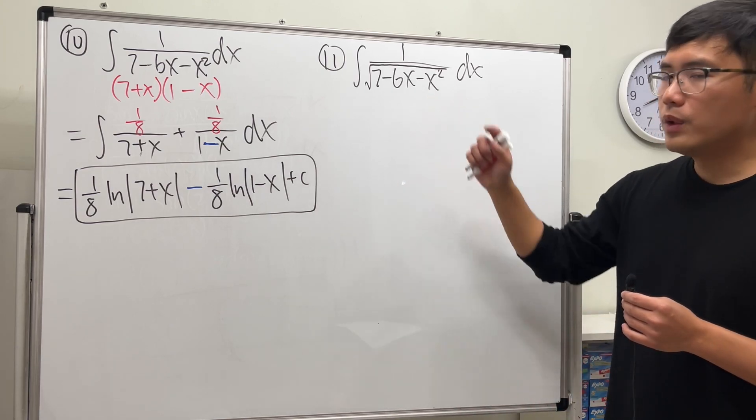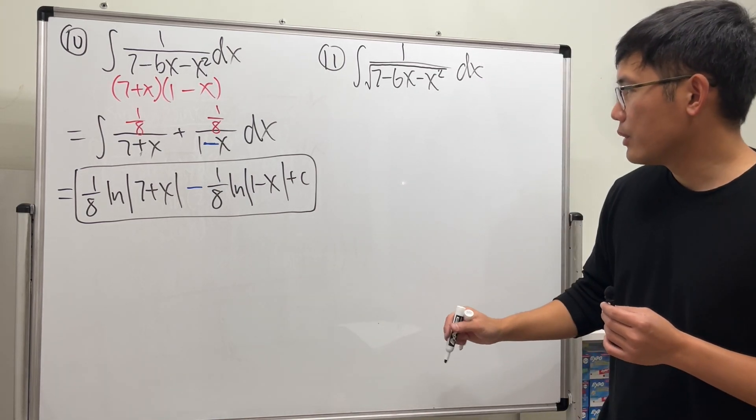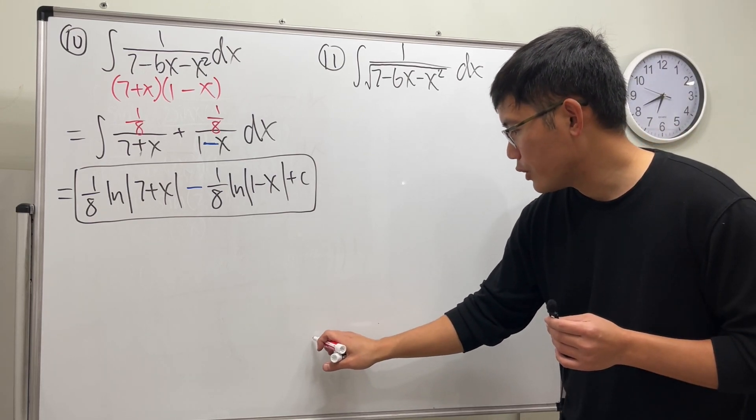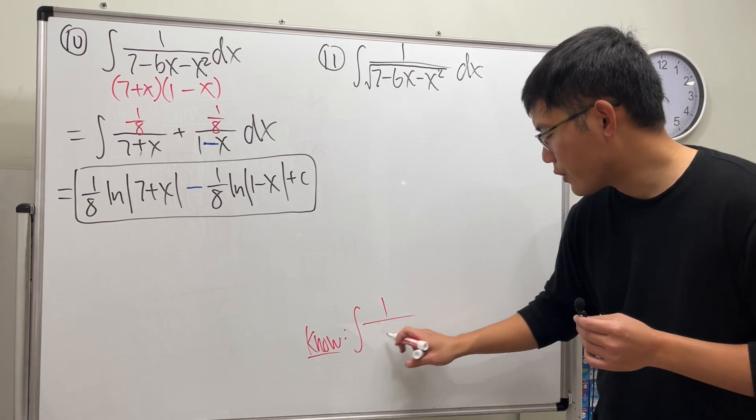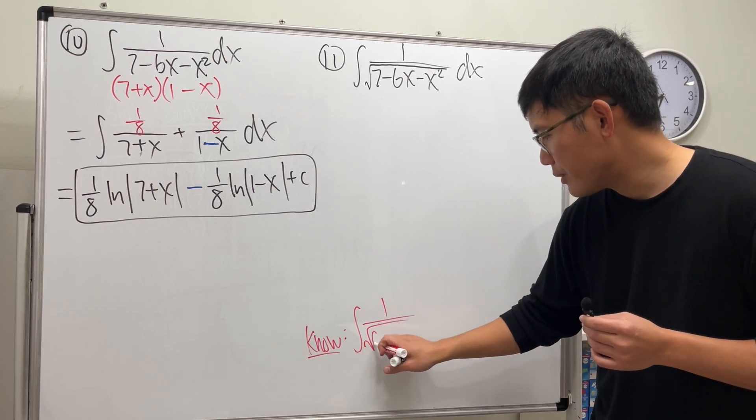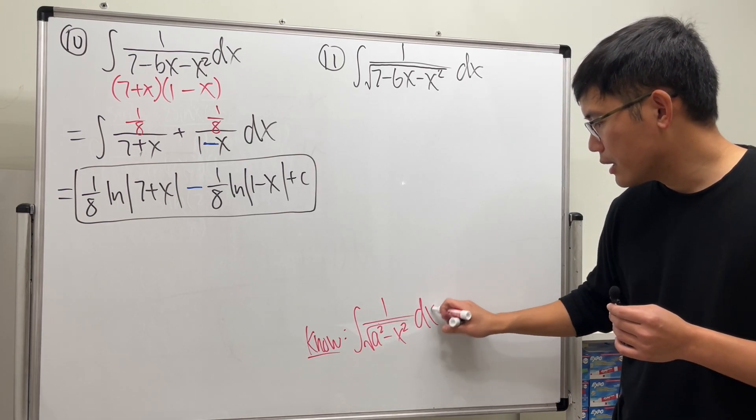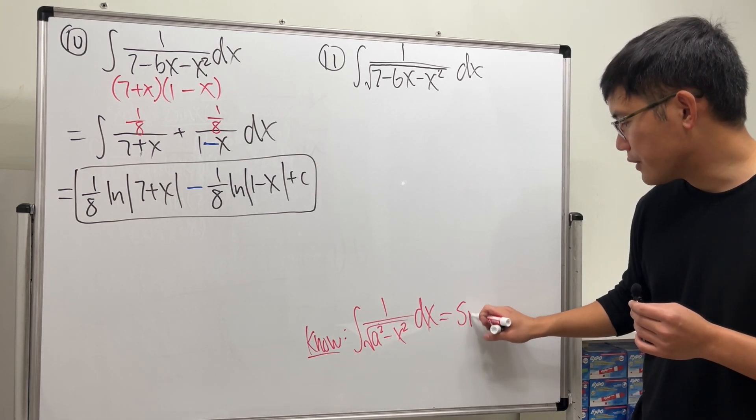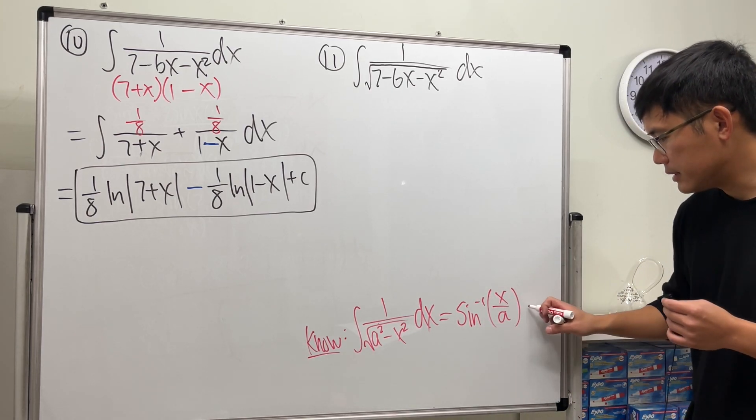For this right here, we will have to recall what we did for question number three. Recall from question number three we know that when we have the integral of 1 over square root of some number, a squared minus x squared, this right here gives us inverse sine of x over a plus c.